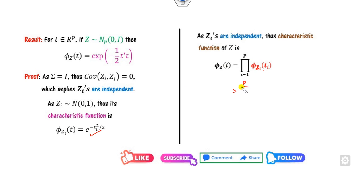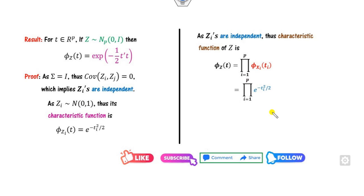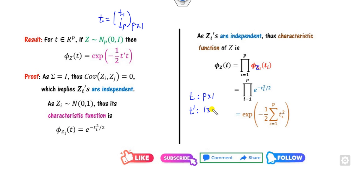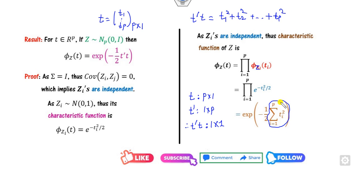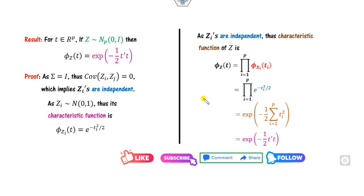Substituting the characteristic function of each Z_i, we get the product from i=1 to P of e raised to minus T_i squared divided by 2. This equals e raised to minus (sum of T_i squared) divided by 2. Since T is a P cross 1 vector, T transpose T equals T1 squared + T2 squared + ... + TP squared, so the characteristic function of Z is e raised to minus T transpose T divided by 2.